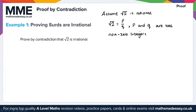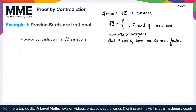We also assume P and Q have no common factors. Now we've got everything we want to assume. So let's start with the idea that root 2 can be expressed as P over Q — root 2 equals P over Q.